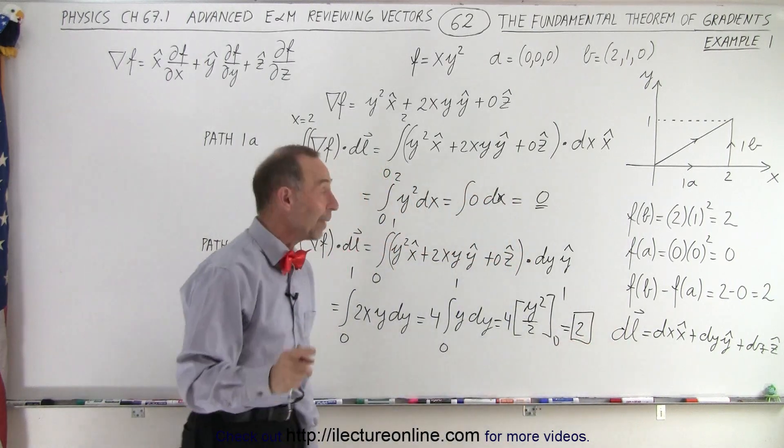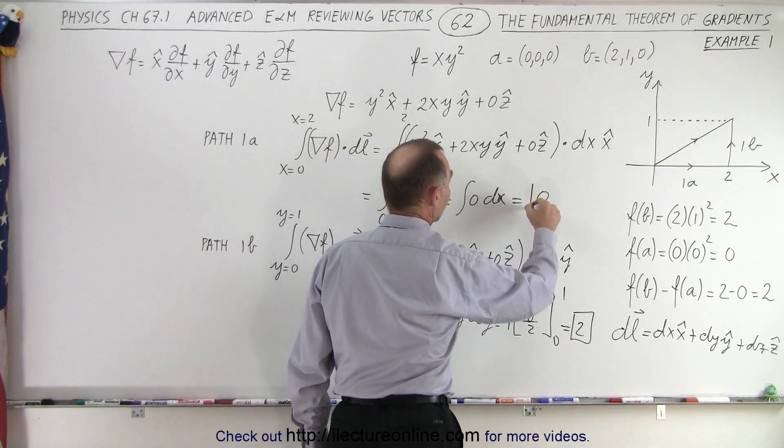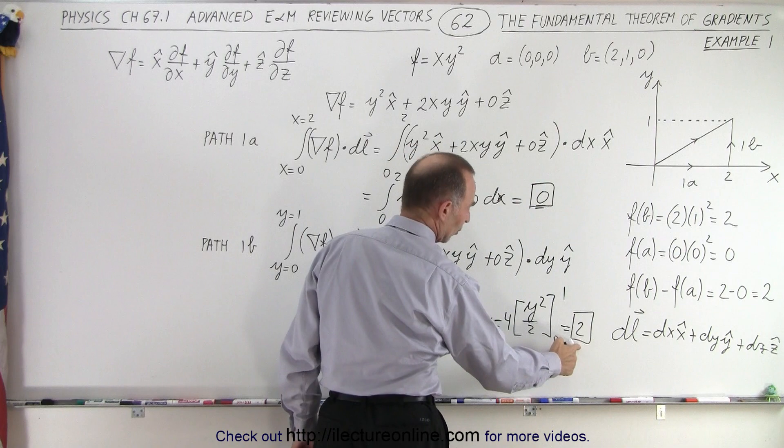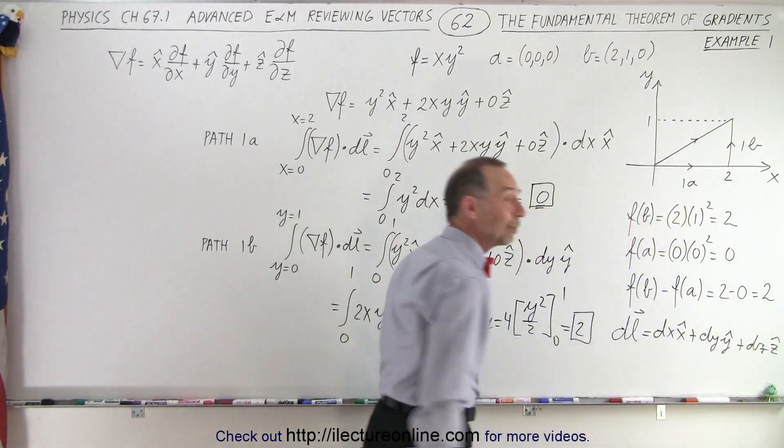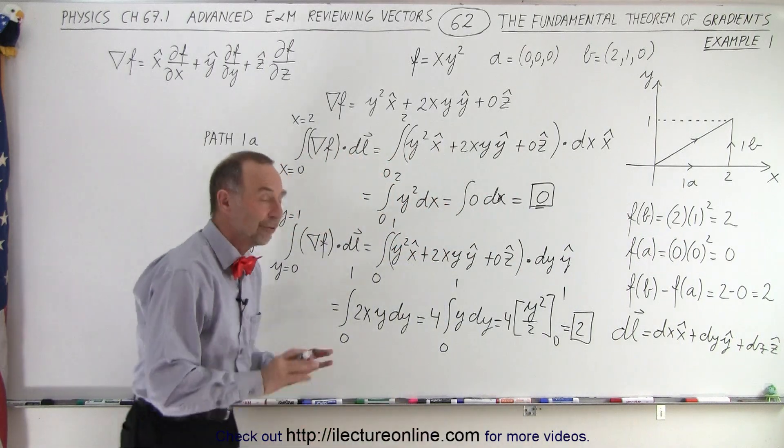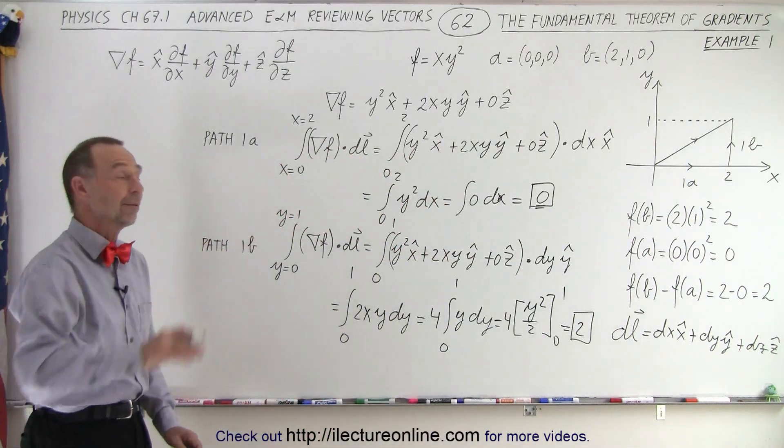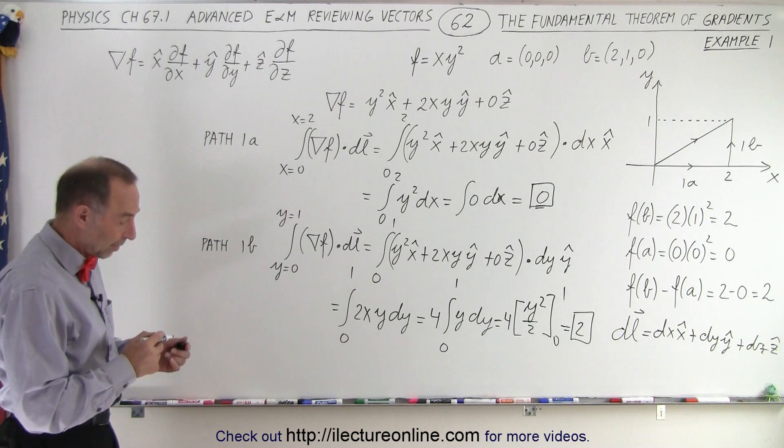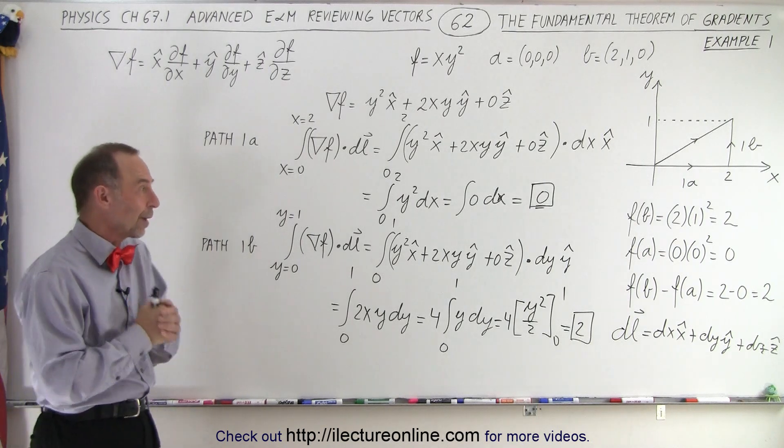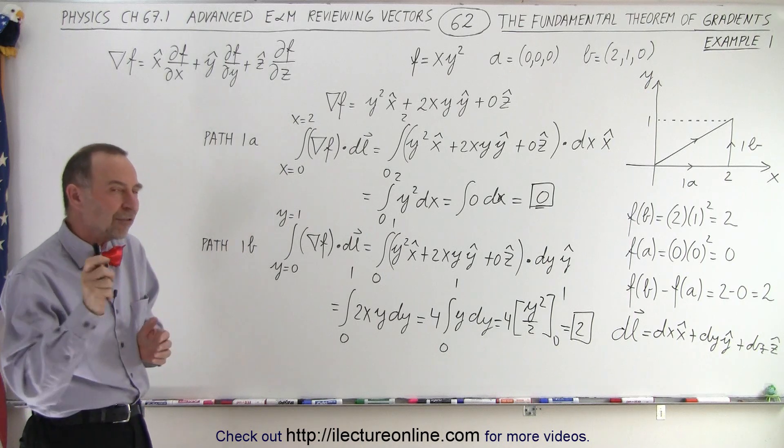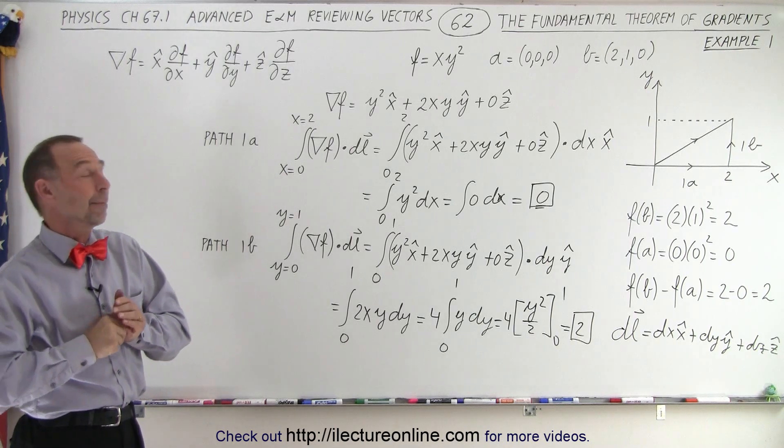And notice, when we add the result of our first path 1a, add it to the result of path 1b together, we get 2, which is the same as the value that we found when we took the difference of the function evaluated at the two endpoints from A to B. So here you can see that, yes, it appears that the fundamental theorem of the gradient does work, but we haven't shown yet that it's path independent.